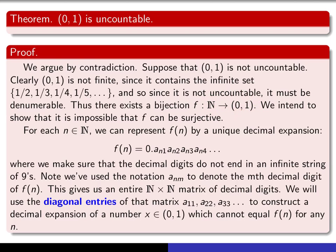And we're going to get a contradiction just from the fact that we'll show that it's impossible that f is surjective. So, for each n in the natural numbers, when we take f(n), we get a number between 0 and 1. And therefore, it has a decimal expansion.